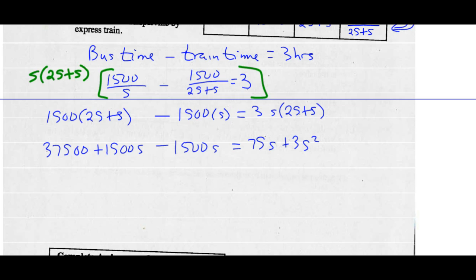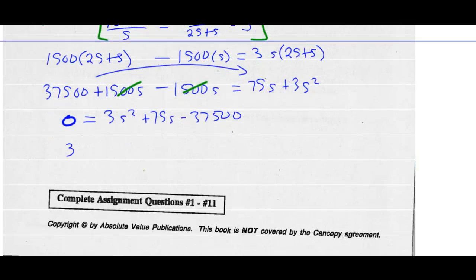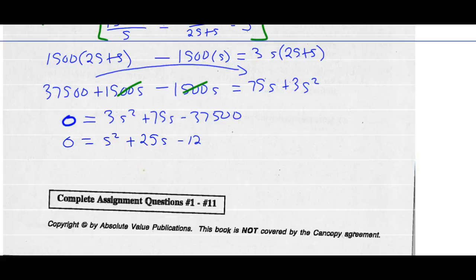The 1,500S terms cancel. Setting the equation equal to zero: 3S squared plus 75S minus 37,500 equals zero. I can divide every term by 3, giving S squared plus 25S minus 12,500 equals zero.